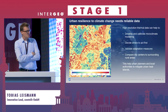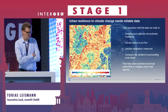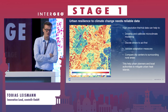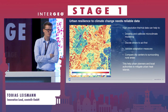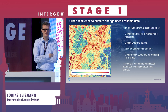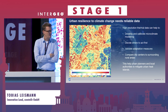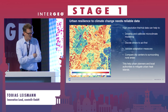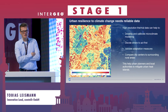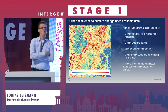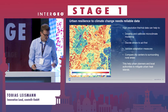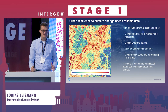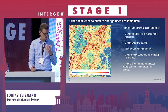We actually need a lot of temperature data to develop and calibrate microclimate modeling in cities. We really need a digital twin for the climate of cities. We need to decide where to act first, where to build, and where to bring mitigation methods like greening and vegetation cover.